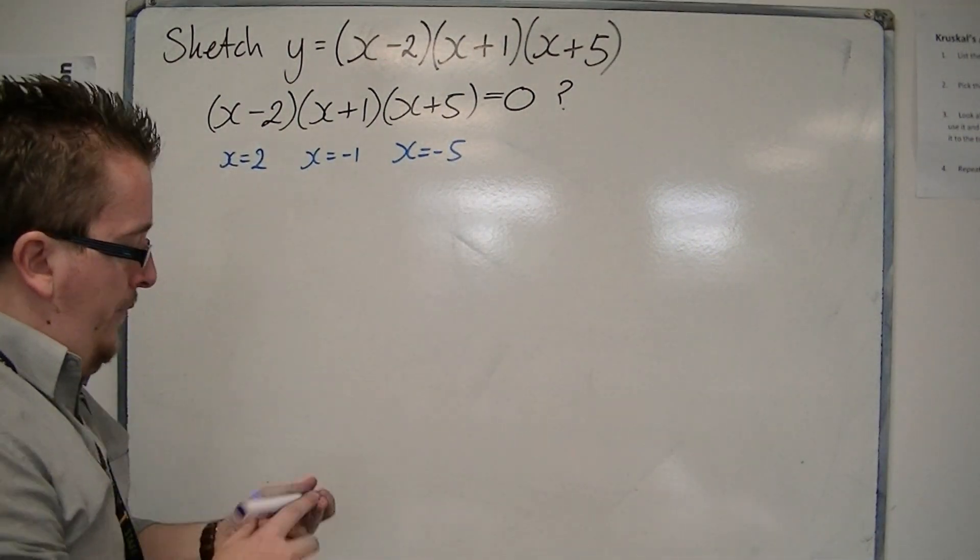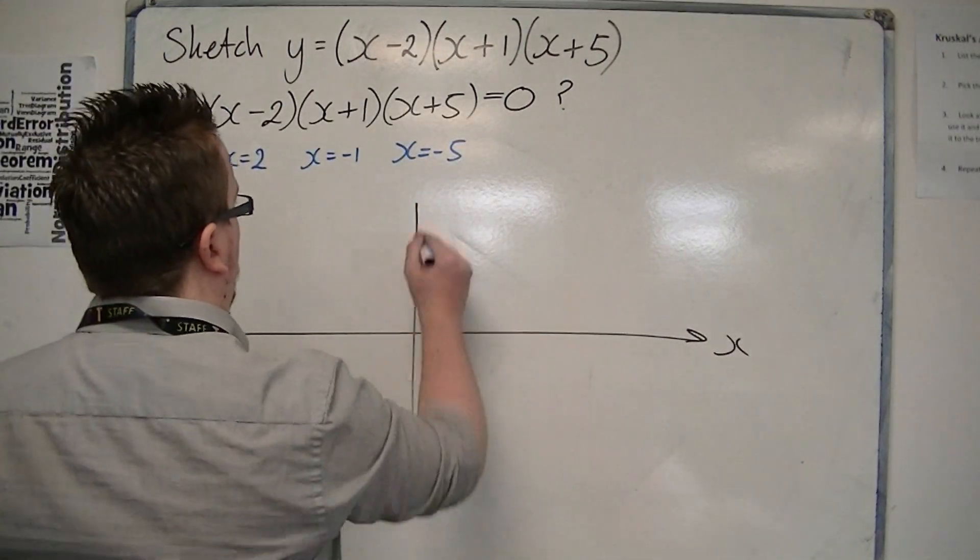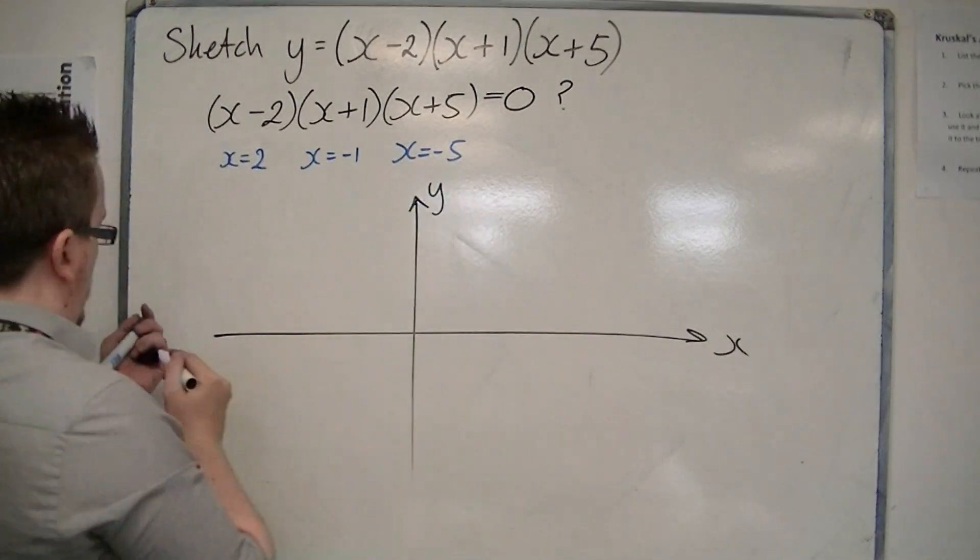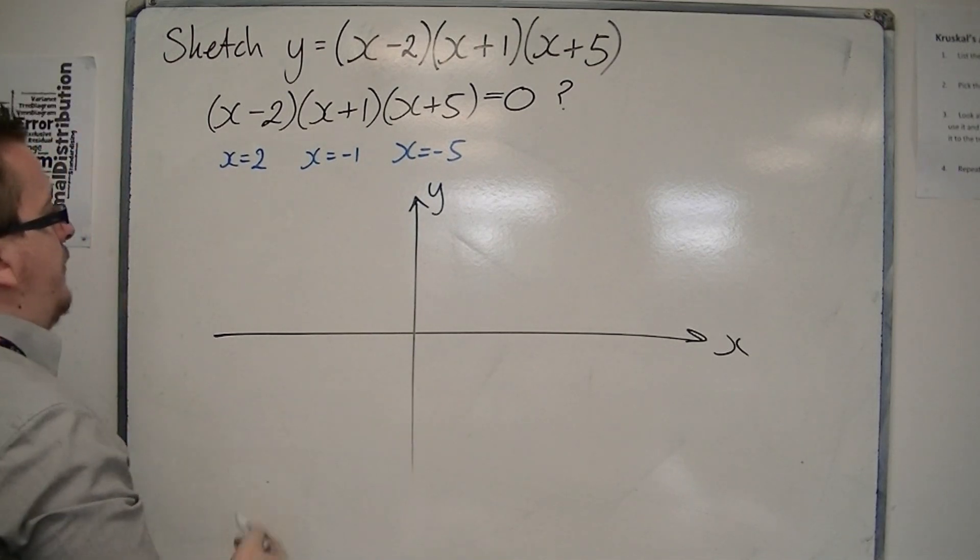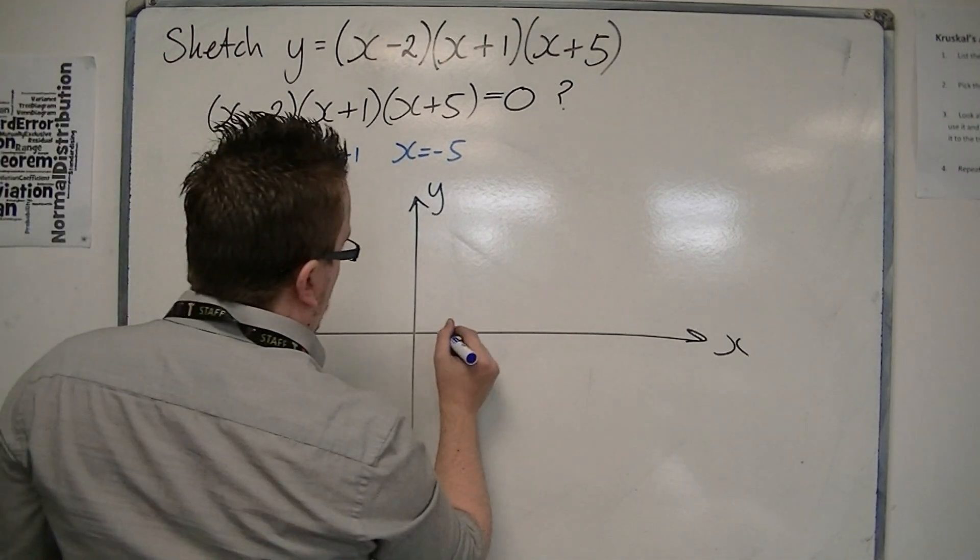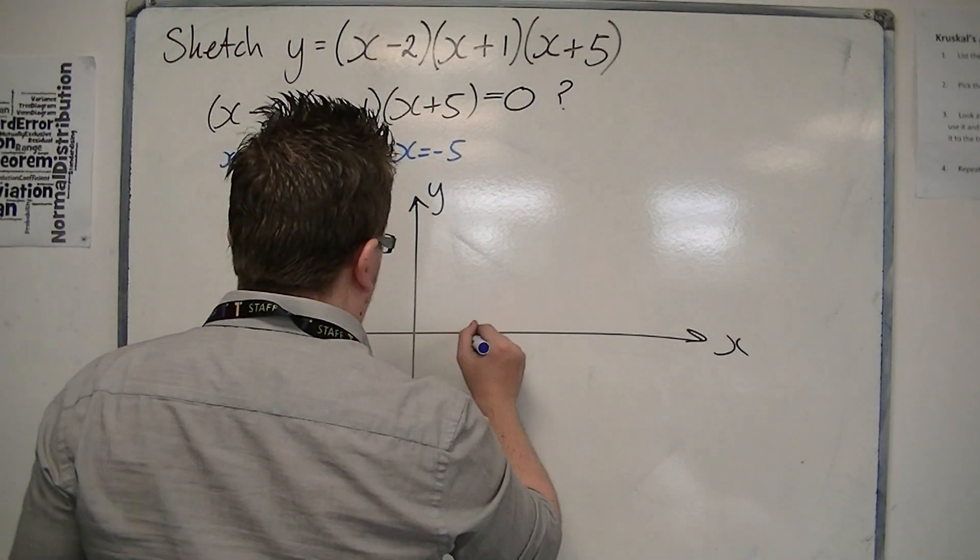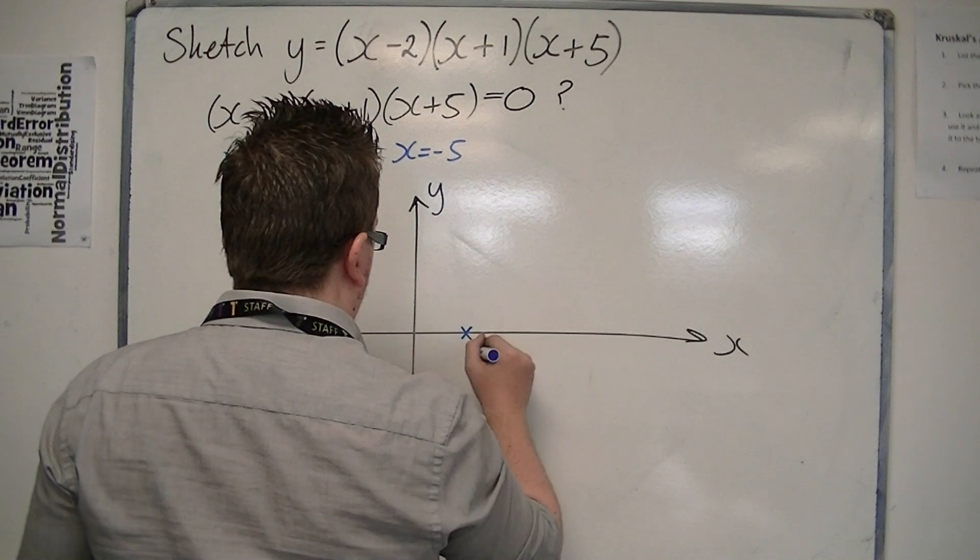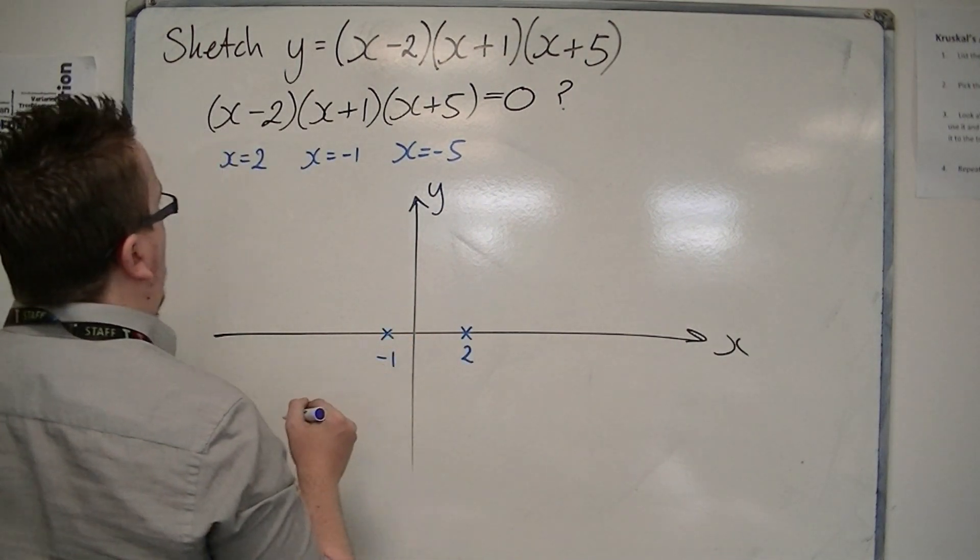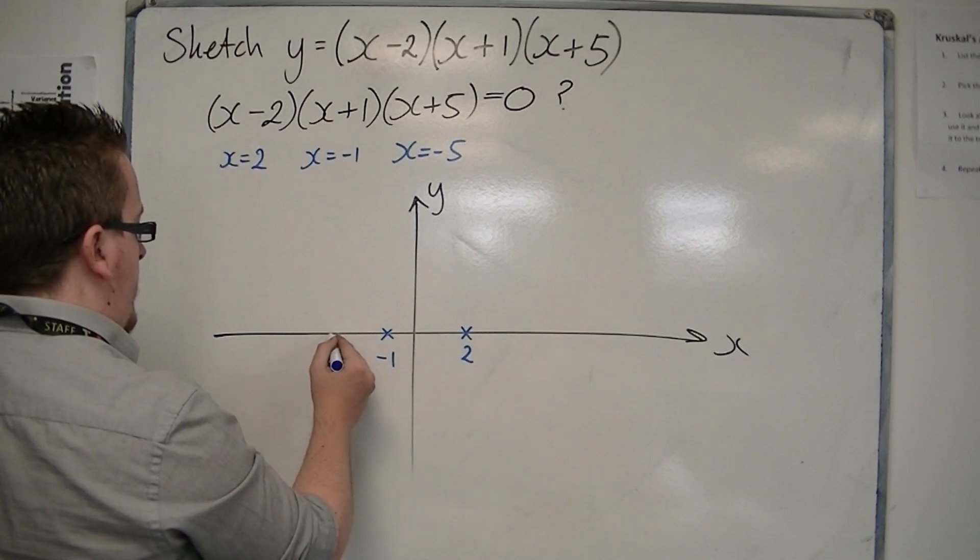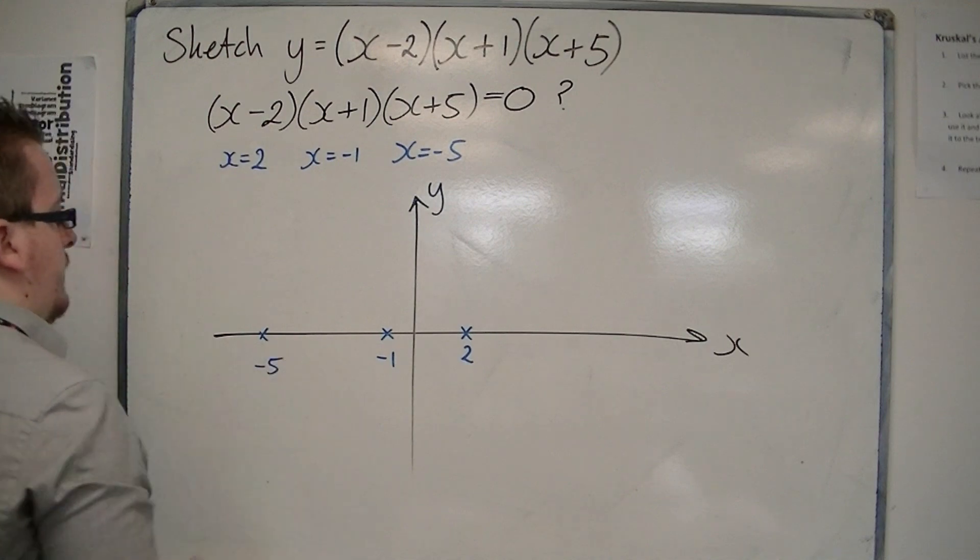So we now have three values on the x-axis: minus one, minus five, and two. So let's have two there, we're going to have minus one, and we're going to have minus five. So two, three, four, five, let's have minus five there.